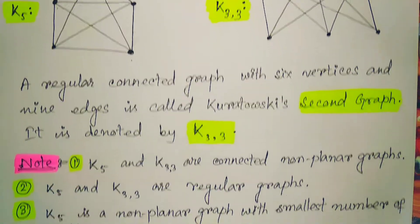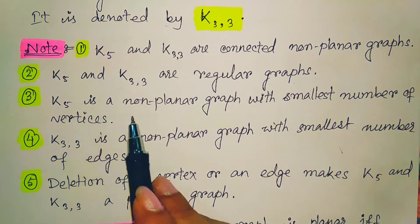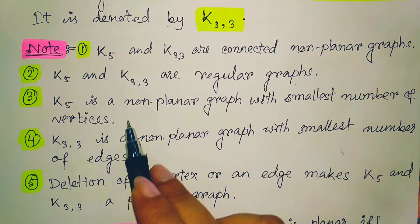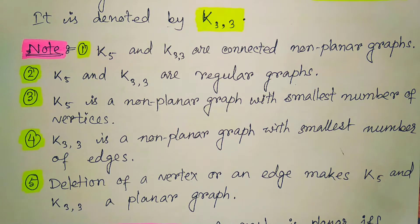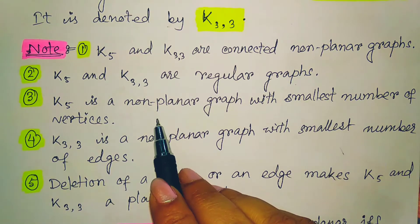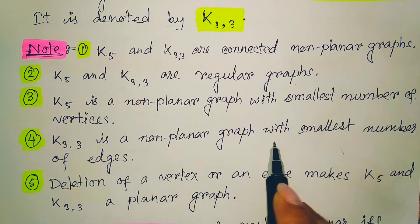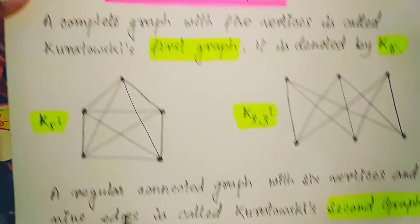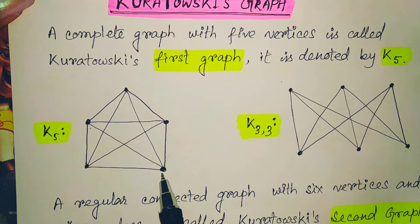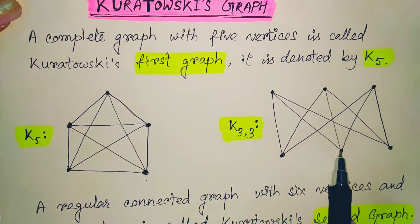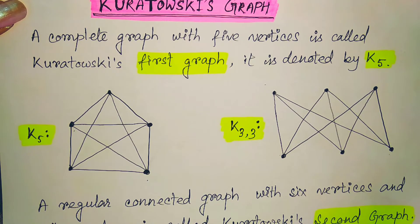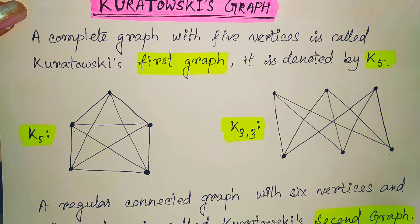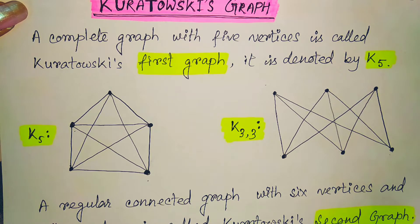K5 is a non-planar graph with the smallest number of vertices — it is the graph with the fewest vertices for which we can say a graph is non-planar. Likewise, K3,3 is a non-planar graph with the smallest number of edges. So for a non-planar graph there must be a minimum of 5 vertices and a minimum of 9 edges.